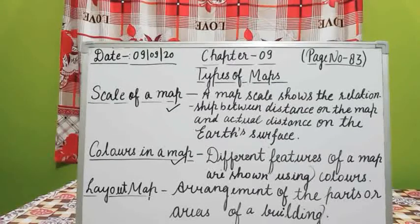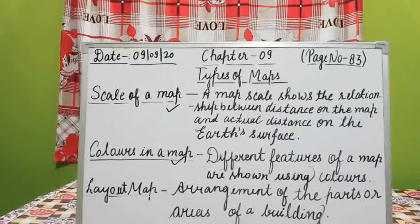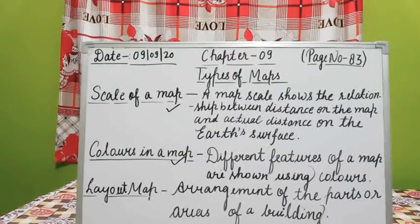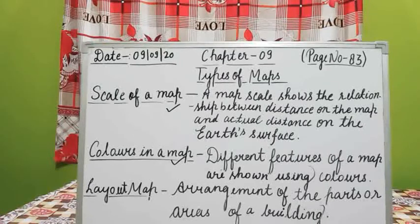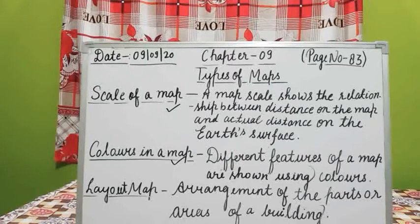In the map, blue color denotes different water bodies — rivers, sea, lakes, ponds, etc. Green denotes plain areas like low lands or agricultural lands. Sets of brown or violet are used to show high lands. Yellow shows lands higher than plains or desert areas.